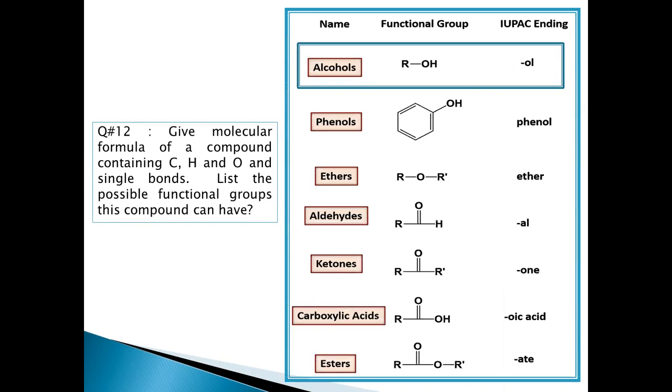These are the functional groups which are carbon, hydrogen and oxygen. You can see that all of these are double bonds. Ether is single bonds, but hydrogen bonds. This is a functional group which is called R-OH.